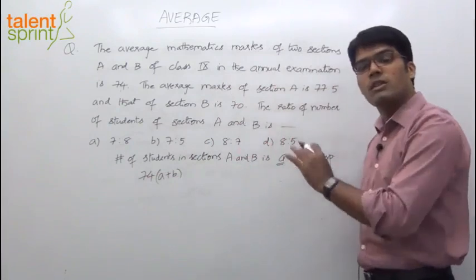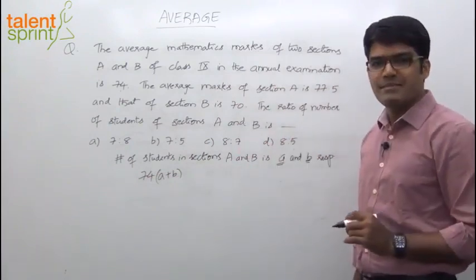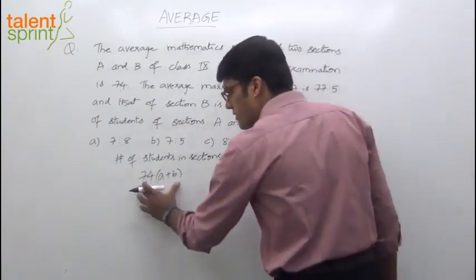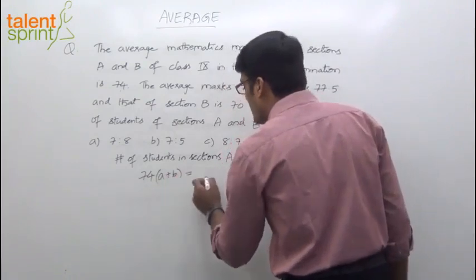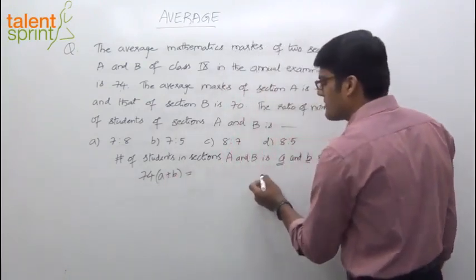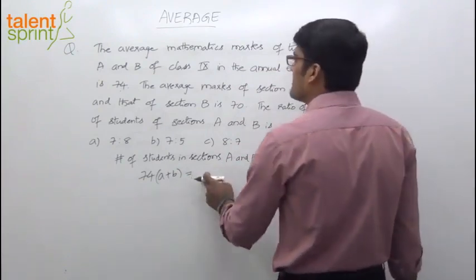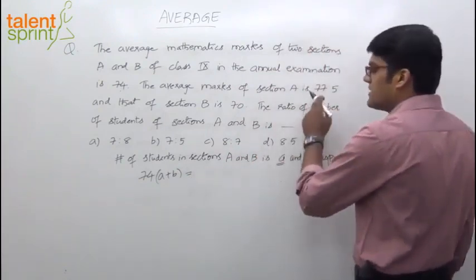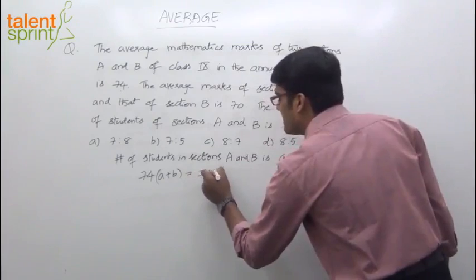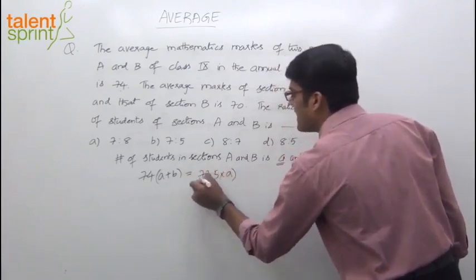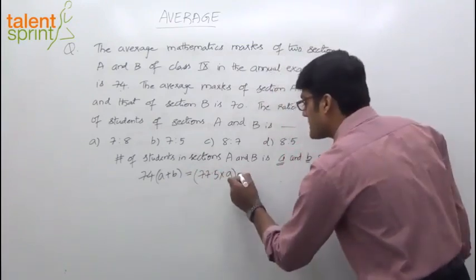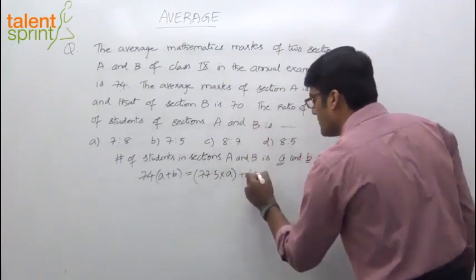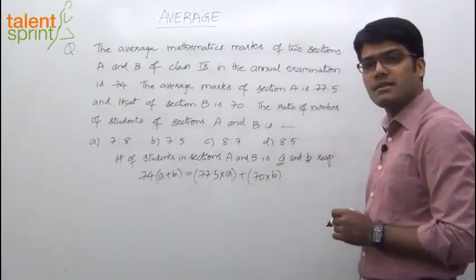This is the sum of the marks of all students in both sections A and B. Now this total should be equal to the sum of marks in section A plus the sum of marks in section B. What will be the sum of marks of section A? The average marks of section A is 77.5. Let us multiply the average 77.5 with A, the number of students, plus the average of section B is 70. Multiply that with B, the number of students in section B.